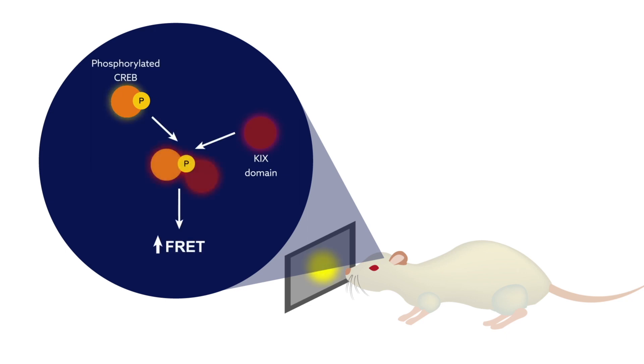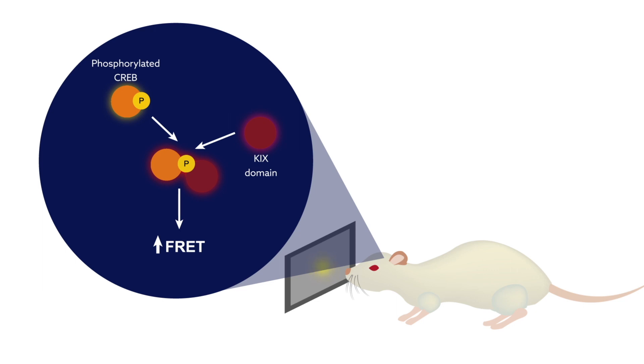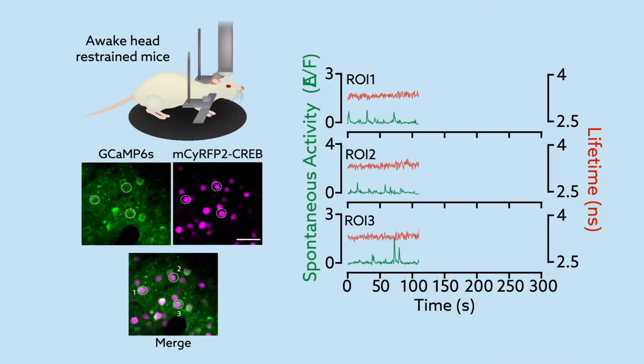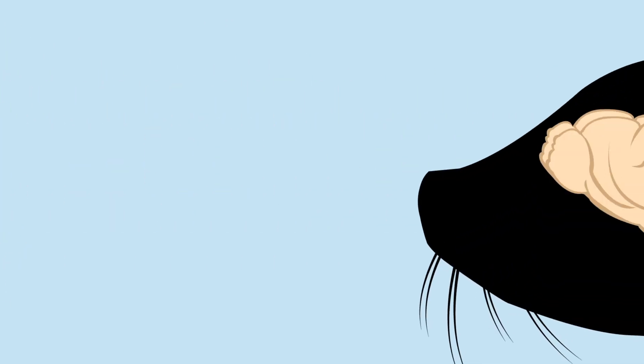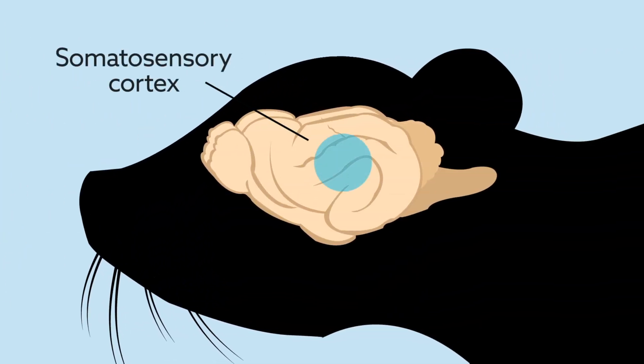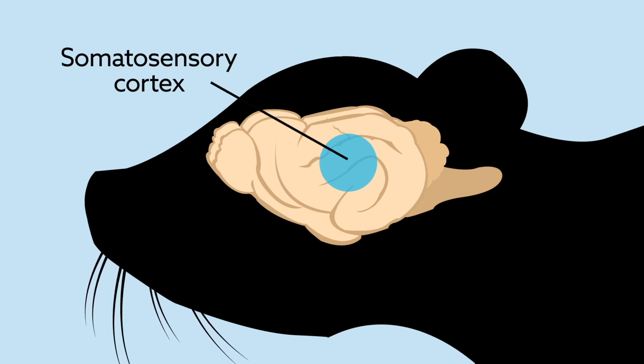By monitoring both CREB and calcium in individual cells, the team could precisely capture the interaction between neuronal activity and CREB. They then tracked CREB activity in the somatosensory cortex, which is important for detecting tactile stimuli from the mouse's whiskers.